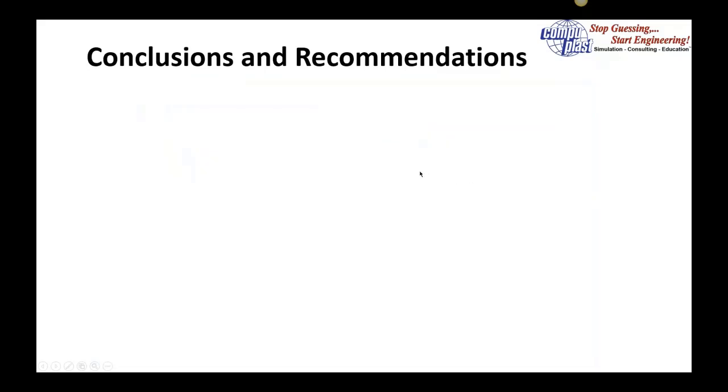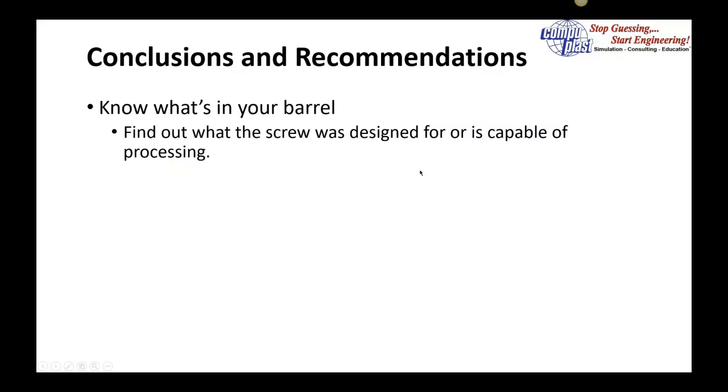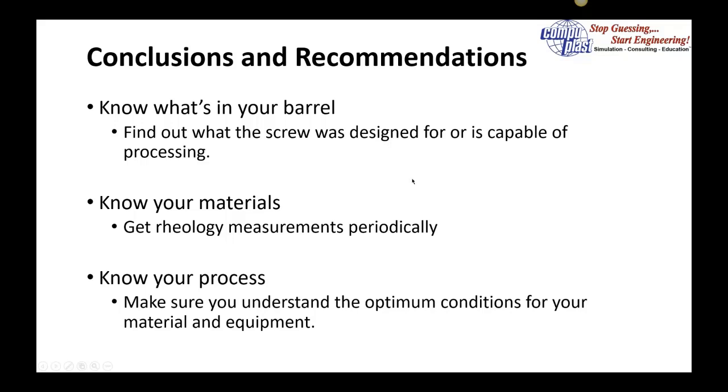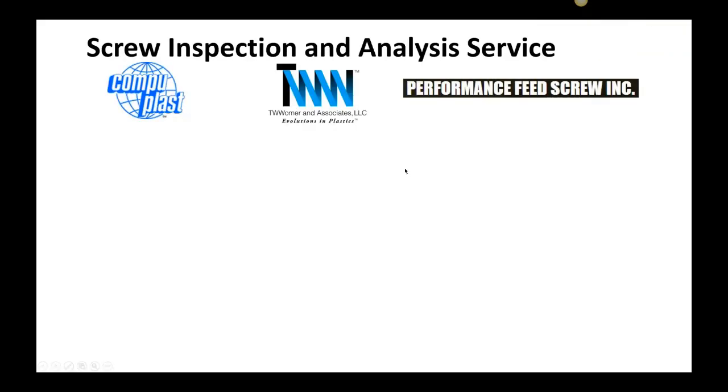The conclusions and recommendations: know what's in your barrel. Find out what the screw was designed for or is capable of processing. Know your materials—get rheology measurements periodically. It may be worthwhile to find a lab and send materials out every 4, 6, 8 months just to see if the material consistency is remaining the same. Know your process. Make sure you understand the optimum conditions for your material and your equipment. Understand that changing conditions, changing the screw RPM, means you're changing the temperature of the material even though you haven't adjusted the barrel.